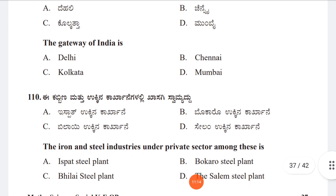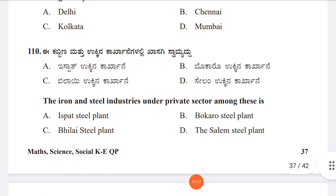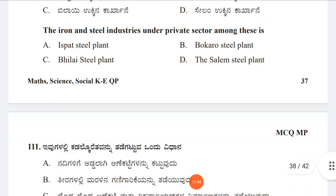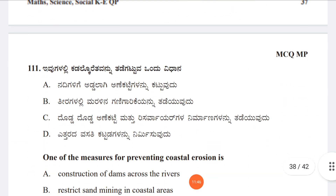Question 110: Among these, which iron and steel industry is under the private sector? Option A: Ispat Steel Plant, Option B: Bokaro Steel Plant, Option C: Bhilai Steel Plant, Option D: Salem Steel Plant. Option A is correct — Ispat Steel Plant is under the control of the private sector.